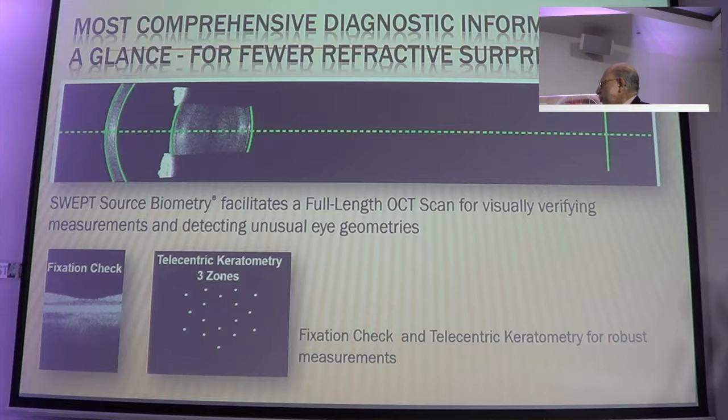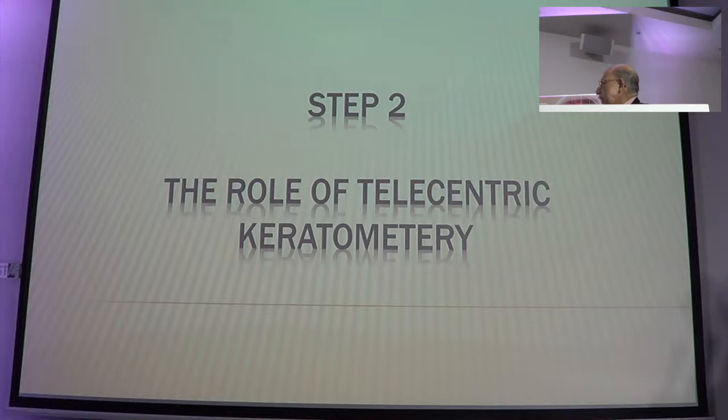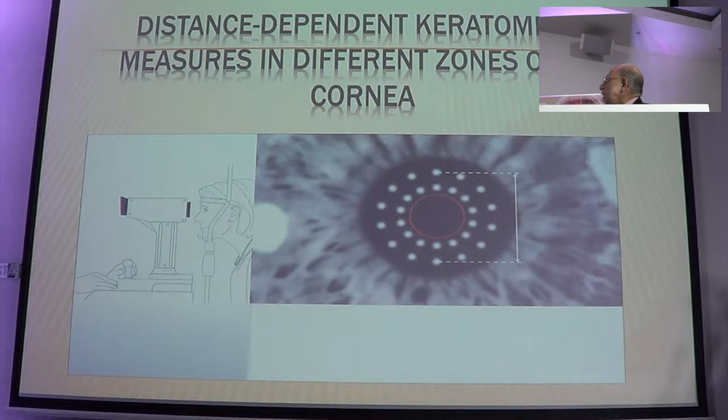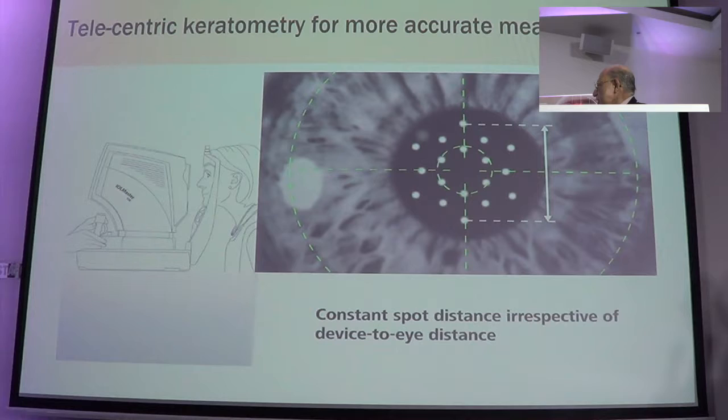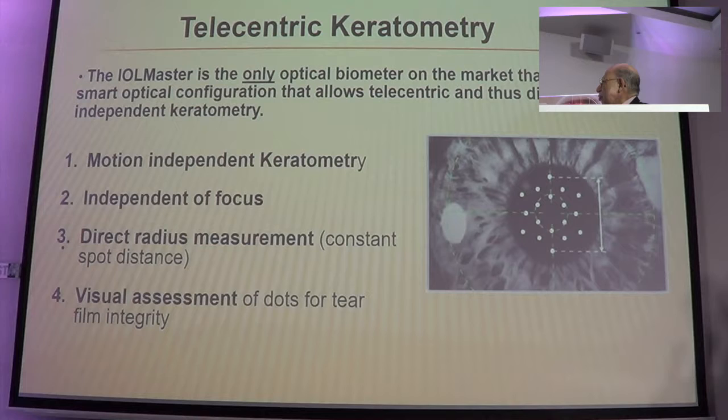You can go exactly where you are in shape. You can utilize what we call static keratometry material to check. When we talk about telecentric keratometry material, it essentially means it is distance-independent. When you have a constant spot distance irrespective of the device-to-eye distance, this gives you motion-independent keratometry — you get a direct radius reading — and the visual assessment of the dots also gives you an assessment of tear film integrity.